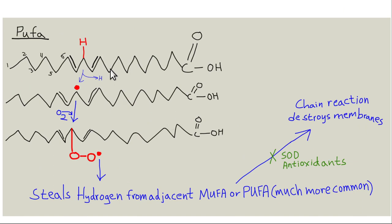In a PUFA omega-6 fatty acid, the hydrogen at the methylene bridge can be plucked off, leaving an unpaired electron. Oxygen combines with this to make a peroxyl group, still a free radical, which can initiate a chain reaction that destroys plasma membranes. The more double bonds on a fatty acid, the more prone it is to undergoing lipid peroxidation.